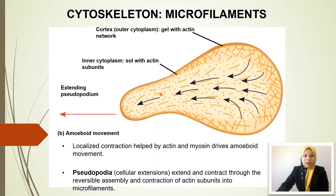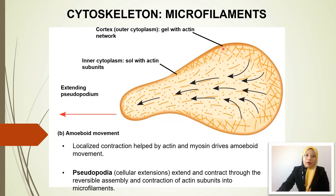Another example of the function of microfilaments is the movement of cells or organisms. In amoeba, the pseudopodia help in movement, assisted by the presence of actin subunits or microfilaments inside the cytoplasm. The network of actin filaments and localized contraction, helped by actin and myosin, drives the movement of amoeba, and the pseudopodia move and contract also with help from the actin subunits.